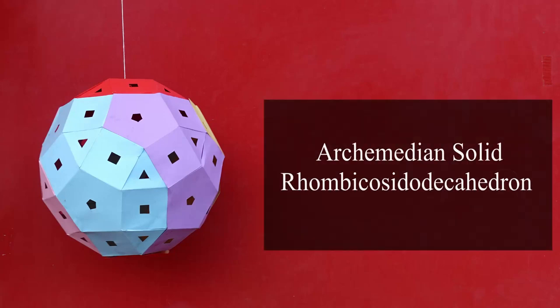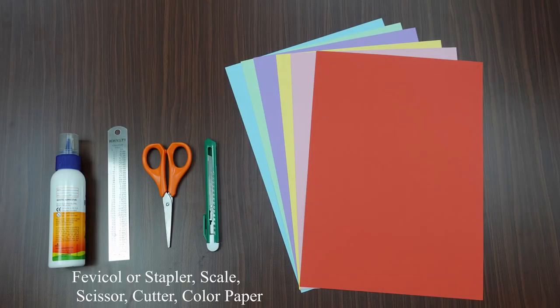Today we will learn how to make a rhombicosidodecahedron, an Archimedean solid. For that we need some colored paper, scale, glue, scissors, cutter, etc.